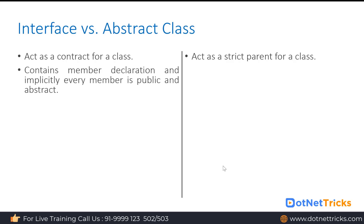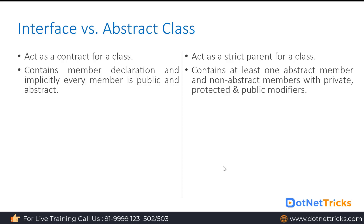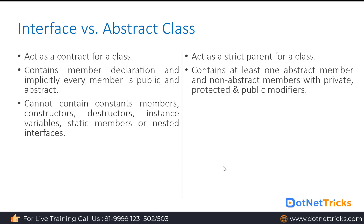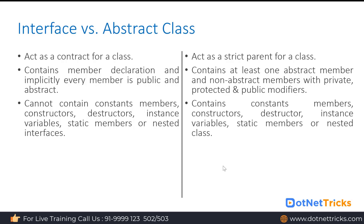In an interface, we have only member declarations, and implicitly every member is public and abstract — you don't need to explicitly define them as public and abstract. But in an abstract class, we can have abstract members as well as non-abstract members, and non-abstract members can be private, public, or protected. In an interface, we cannot have constant members, constructors, destructors, or instance variables. But in an abstract class, we can have constant members, constructors, destructors, instance variables, static members, and nested classes.